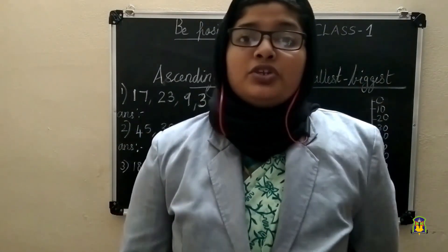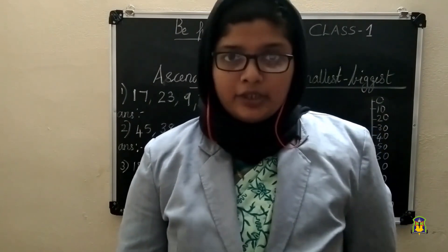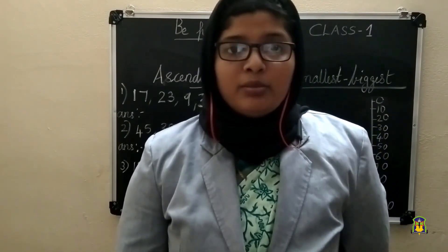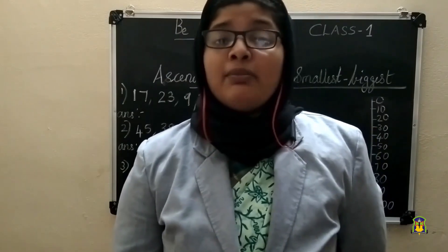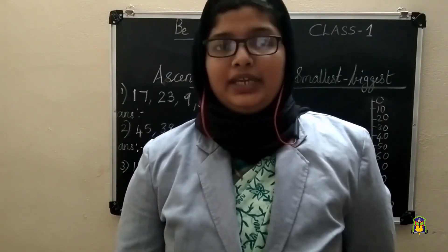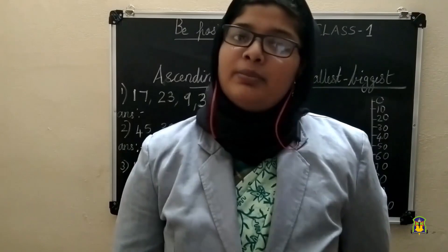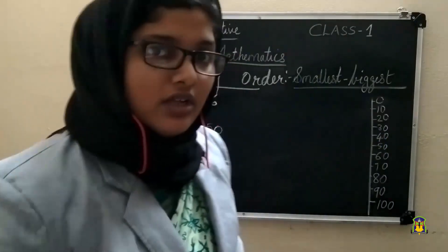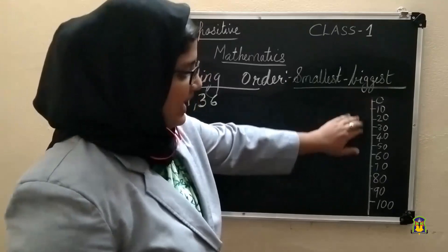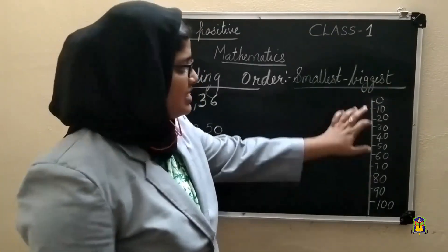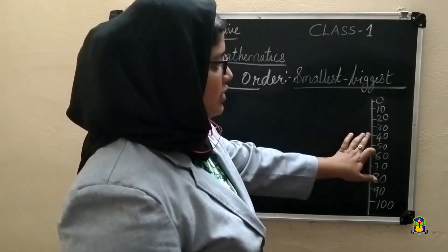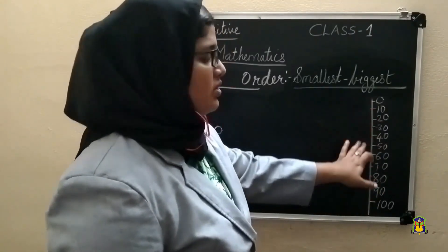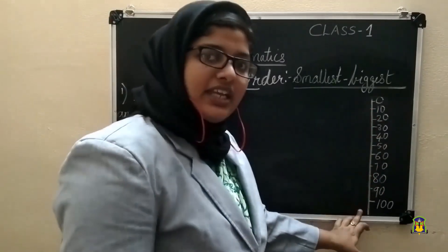Ascending order means arranging numbers from smallest to biggest. Here is the range: 0 to 10, 10 to 20, 20 to 30, 30 to 40, and so on. This is also arranging in ascending order. First is 0, that is the smallest number, and 100 is the largest number.